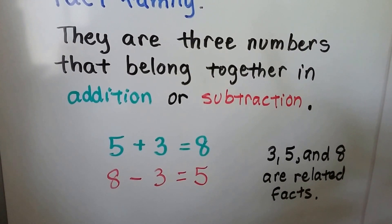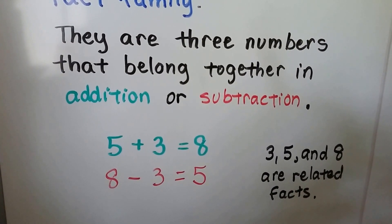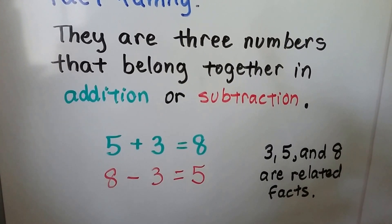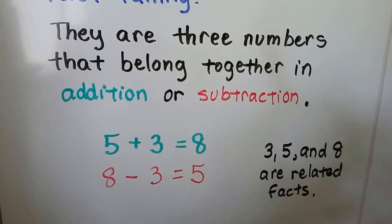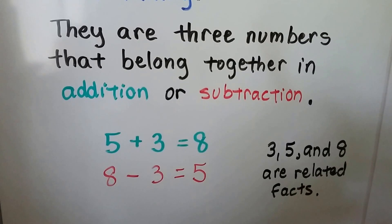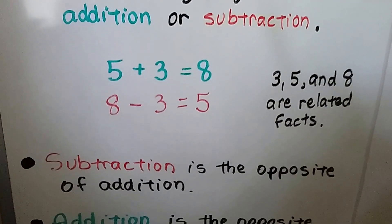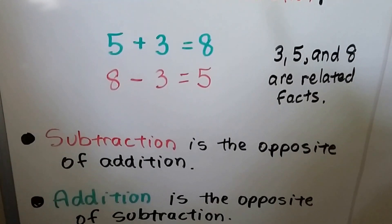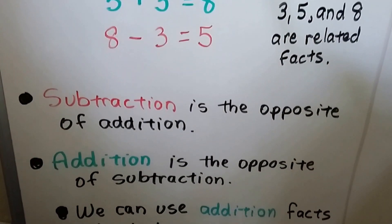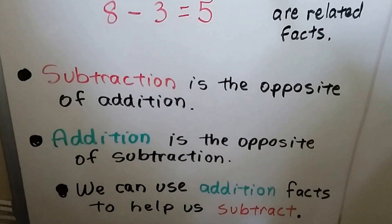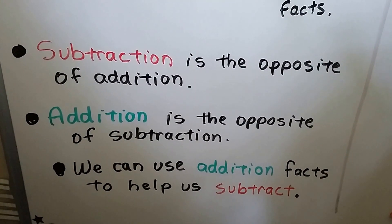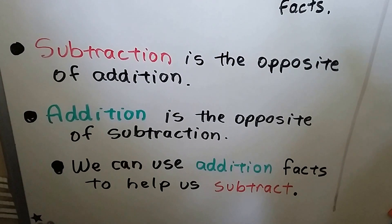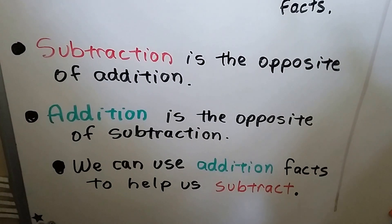We have 5 plus 3 equals 8, and 8 minus 3 equals 5. So 3, 5, and 8 are related facts. Subtraction is the opposite of addition, and addition is the opposite of subtraction. We can use addition facts to help us subtract.